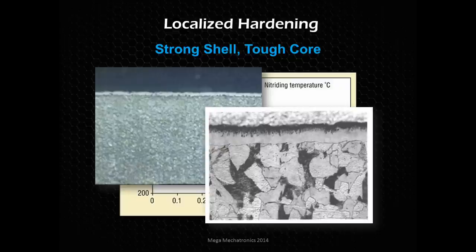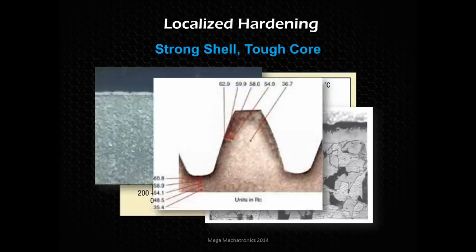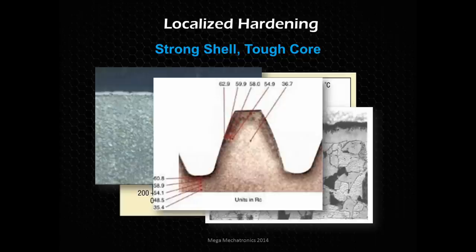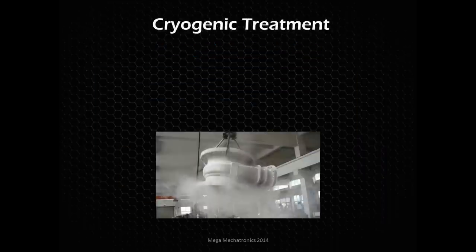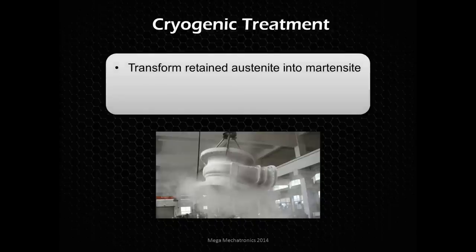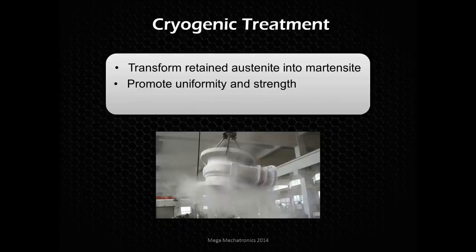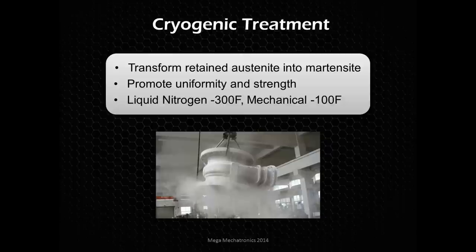This localized hardening is particularly advantageous for gears — you need a hard wearing surface but the gear teeth must not fracture, requiring a tough core to handle the many cycles of fatigue. Cryogenic treatment transforms retained austenite into martensite, promoting uniformity and strength. Liquid nitrogen reaches about minus 300°F, and mechanical super-refrigerators can get down to minus 100°F.